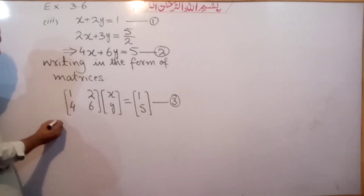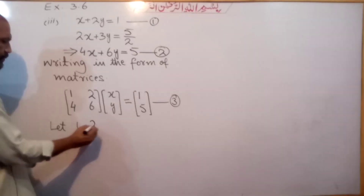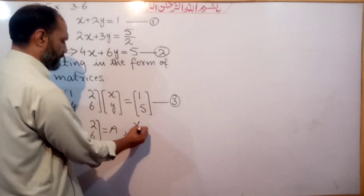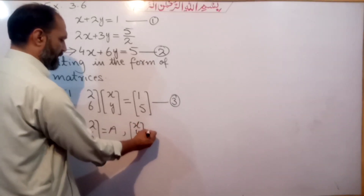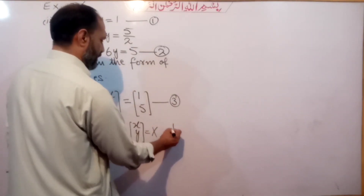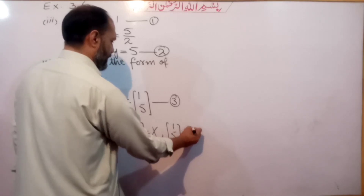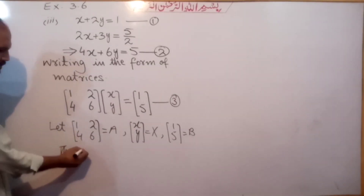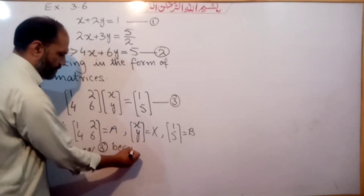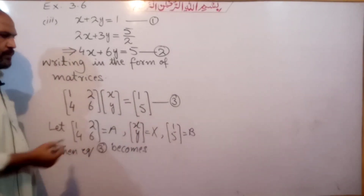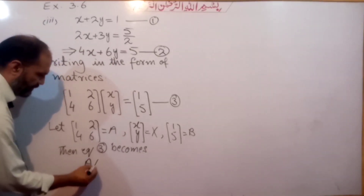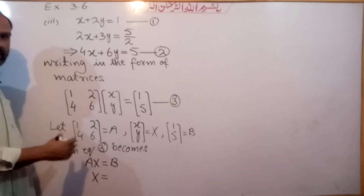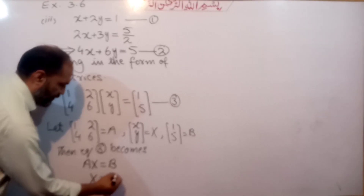That is about the matrix. Let A = [[1, 2], [4, 6]]. Then equation 3 becomes A · X = B, and therefore X = A inverse B.